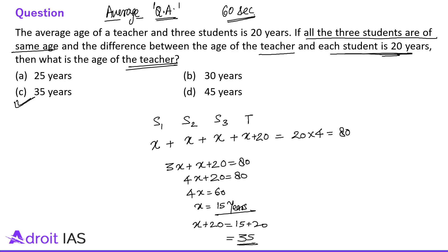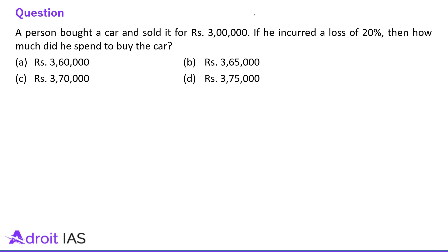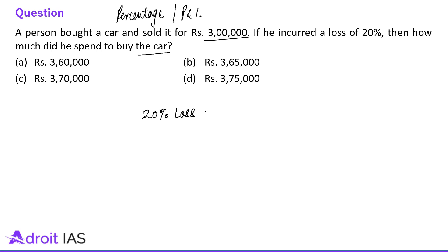Next question: a person bought a car and sold it for 3 lakhs rupees. If he incurred a loss of 20%, how much did he spend to buy the car? This question belongs to percentage or profit and loss. A 20% loss means SP equals 80% of the CP.